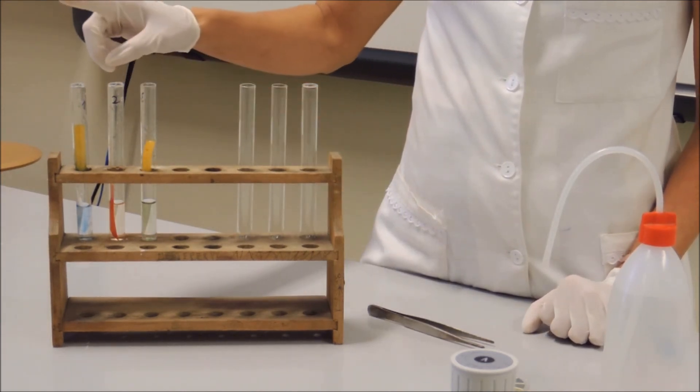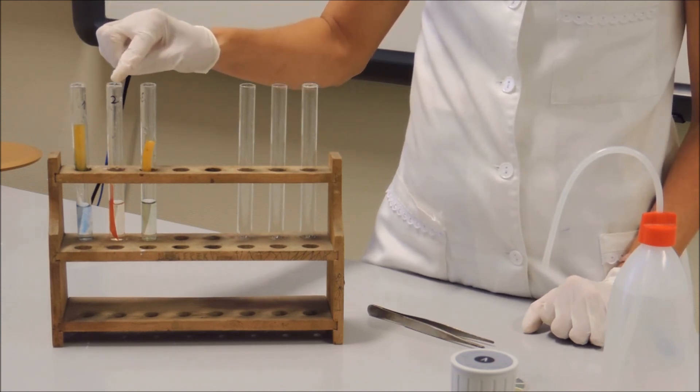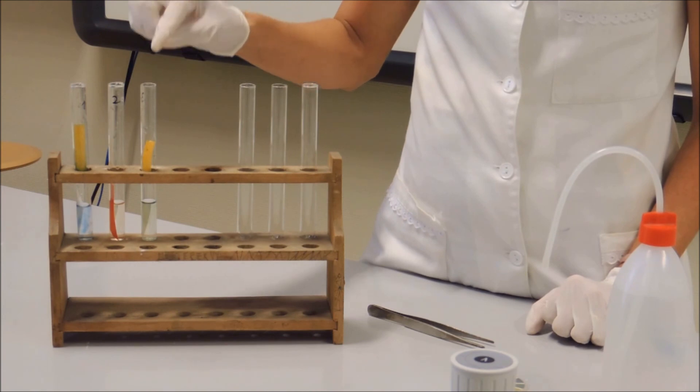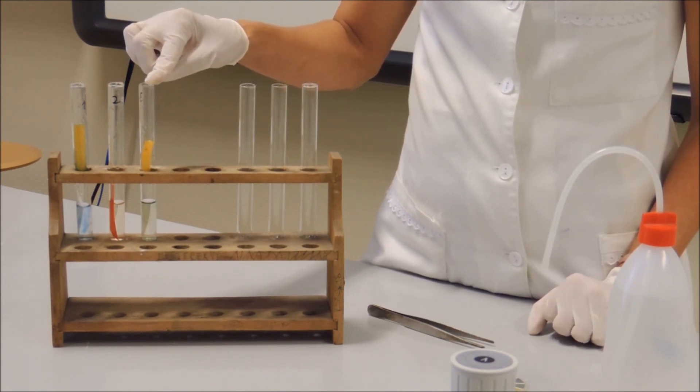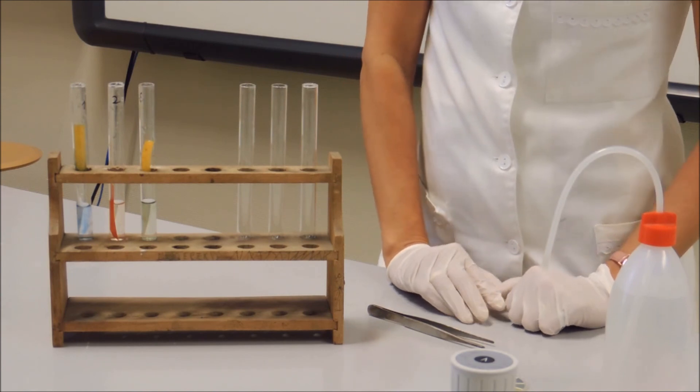So accordingly, the first test tube contained sodium acetate, the second test tube contained citric acid, and the third test tube contained glucose. Experiment completed! Thank you for watching!